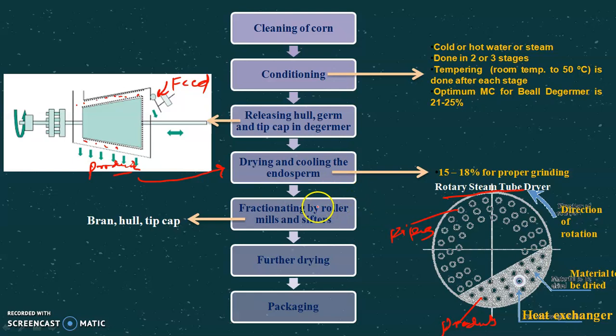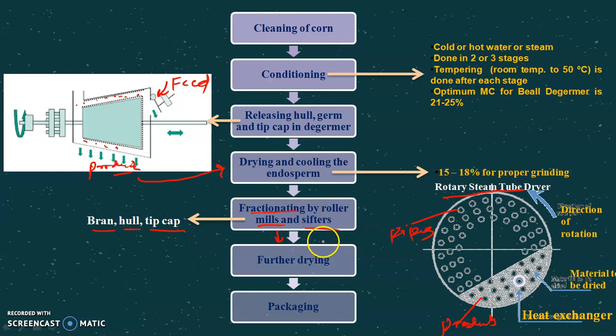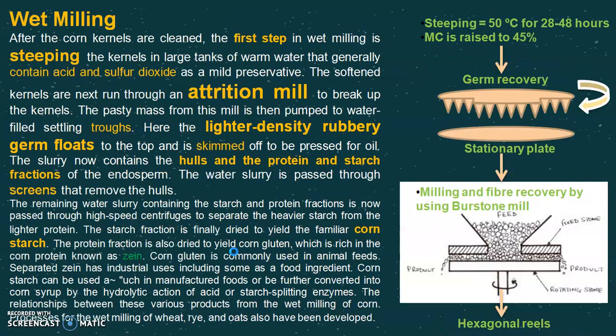After drying, the product is milled and sifted using roll mills or bore stone mills. It is then fractionated into various sizes, and the bran, hull, and tip cap are removed with the help of sifters. Further drying is done if needed to obtain the optimum moisture content required for shelf life, and then the corn flour product is packed.